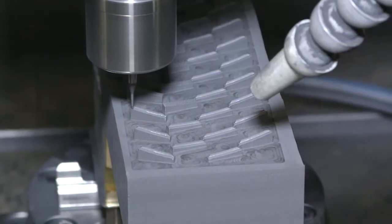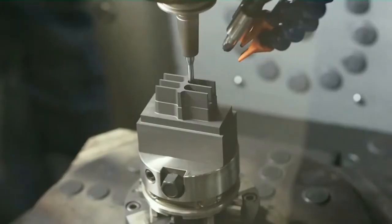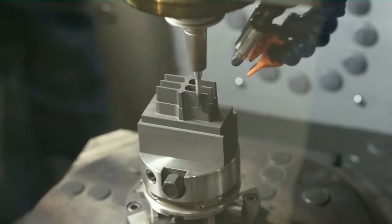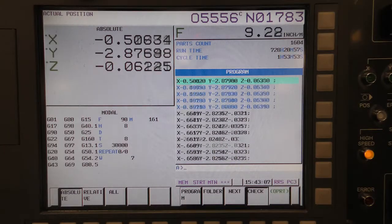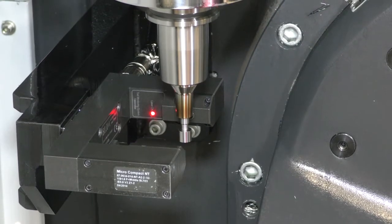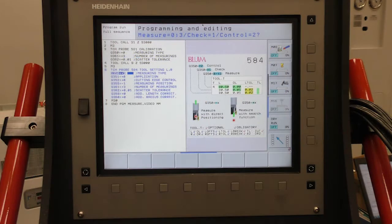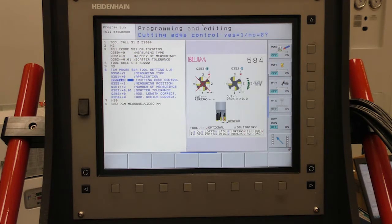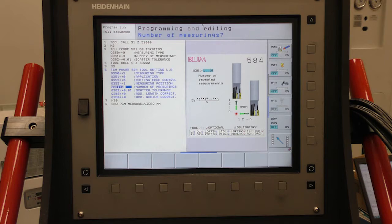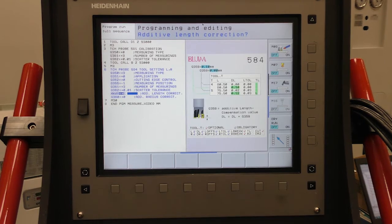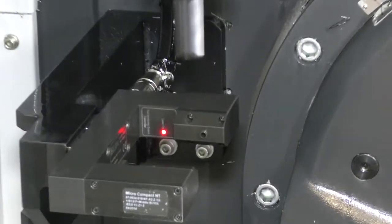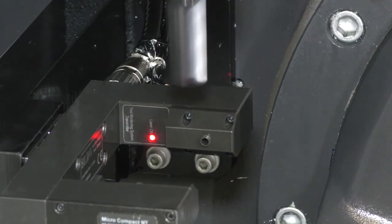We understand that consistency means everything to production, and we know you don't have time for errors due to varying tool performance. Precise, fast, and efficient, the blue laser tool measurement system comes standard on all of our graphite-ready machine models. Generally an expensive option with other mills, this intelligent technology ensures the highest quality tool setting and monitoring you can find.